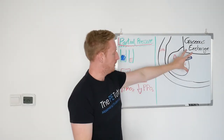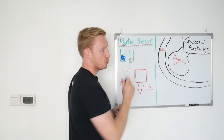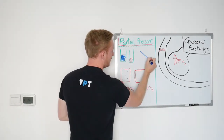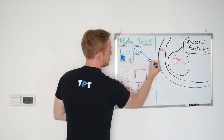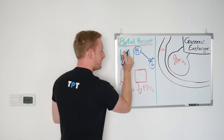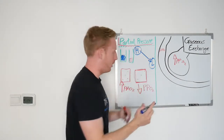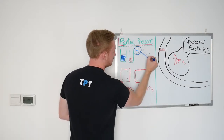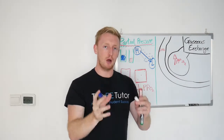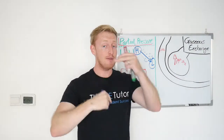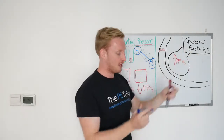Whenever we talk about partial pressure, there is always a movement from high to low. If there's an area of high partial pressure and an area of low partial pressure, the molecules tumble down into the area of lower partial pressure. The same goes for carbon dioxide — I've only been speaking about oxygen for the time being, but we'll get to that in a moment.